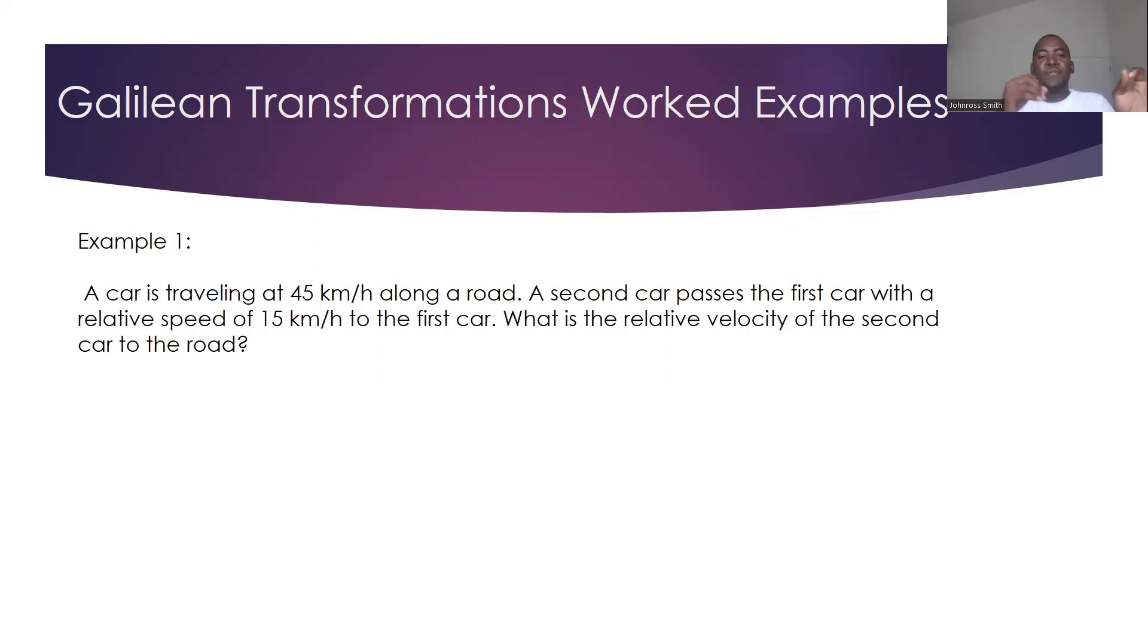Of 15 relative to the 45. So in this case, that first car is actually moving 15 more than the 45 for it to pass it relative to 15. Now what we want to know is what's the relative velocity of the second car to the road. Because here we have three reference frames. The first 45 car, and the car which was going at 60 kilometers per hour, and the road, which is the reference frame that's not moving.